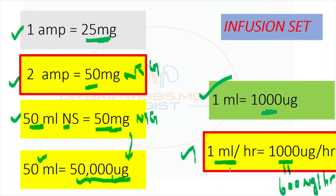If the patient is in acute decompensated heart failure with very high blood pressure, you can start at 2 ml per hour, which gives 2,000 micrograms per hour — approximately 30 to 40 micrograms per minute. To summarize: start at 1 ml per hour giving about 1,000 micrograms per hour, which is approximately the starting dose of 10 micrograms per minute. This applies when using an infusion pump.